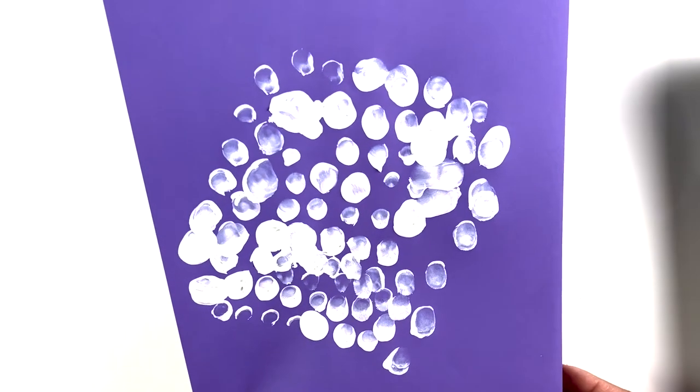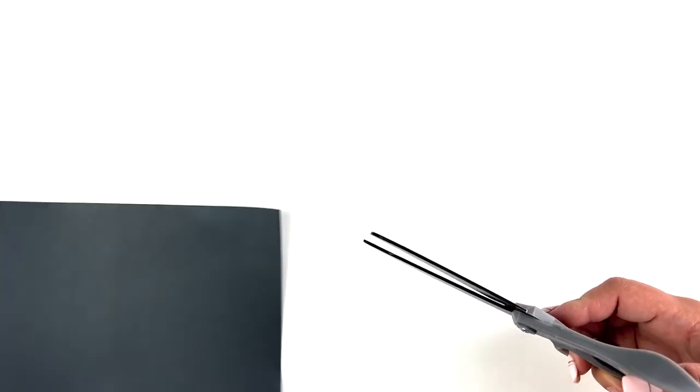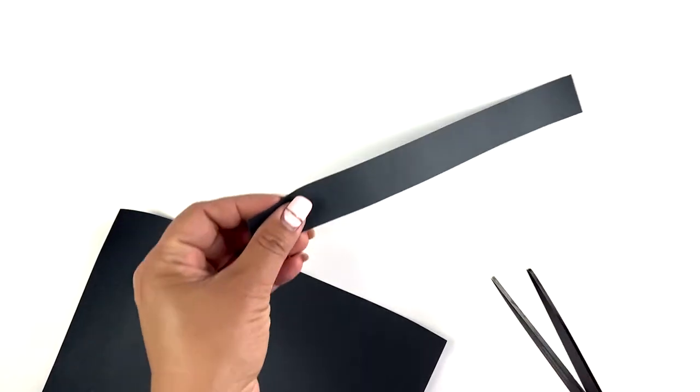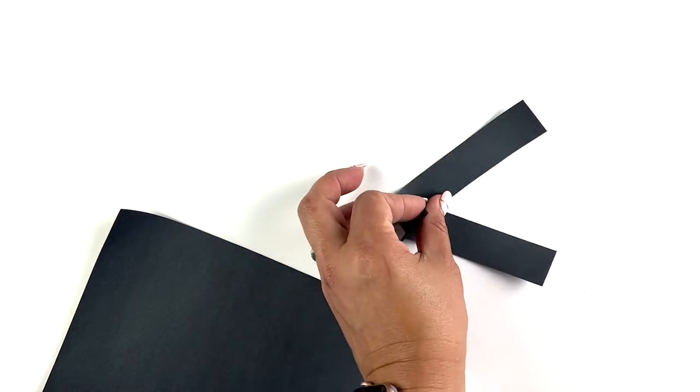Now while you set that aside and let it dry, you can take your black paper and get this ready. So first off, we're going to cut some legs. I'm just gonna cut a strip of black paper and then cut it in half. These will be our legs.